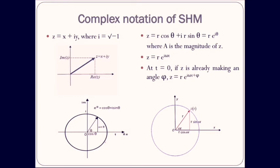If at t equals 0, z is already making an angle phi, then z equals r e to the power i(omega t plus phi). This is the complex notation used in simple harmonic motion.